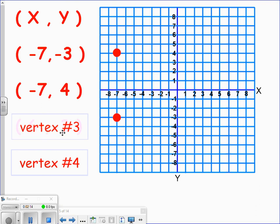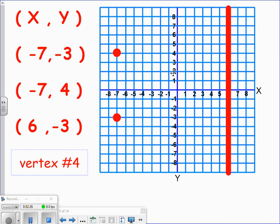The third vertex, the ordered pair is 6, negative 3. So first on the x-axis, we'll go over here to positive 6. And on the y-axis, we'll go down to negative 3. The point where they meet is where we're going to plot that point.